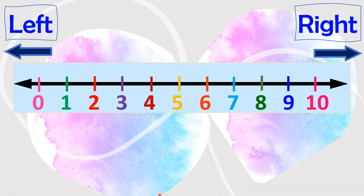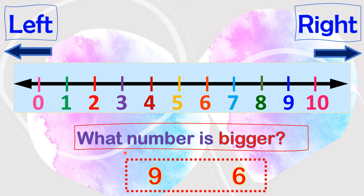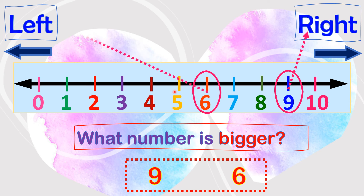Now, it's your turn. We have 9 and 6 as an example. Please tell me which number is bigger. So what's the first step? I will circle 9 and 6 on the number line. Now, tell me which side of the number line is 9? Right side. What about 6? Left side. Now, tell me which number is bigger. 9. Why is 9 the bigger number? Because it's at the right side. Good job.